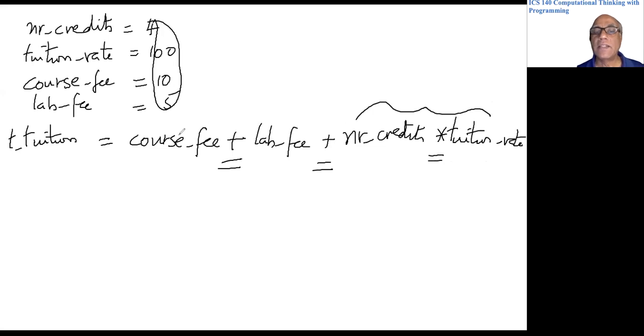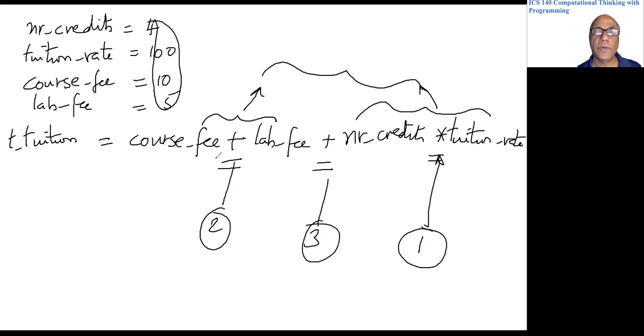Then these two will be added. Then the result of this and the result of this multiplication are added. So this plus is done last. So this is the first thing it does. This is the second thing. This would be the last thing. So that is the order of operations. You can change the order of operations, which is not a good idea here by putting parentheses. Then whatever is in parentheses gets done first.